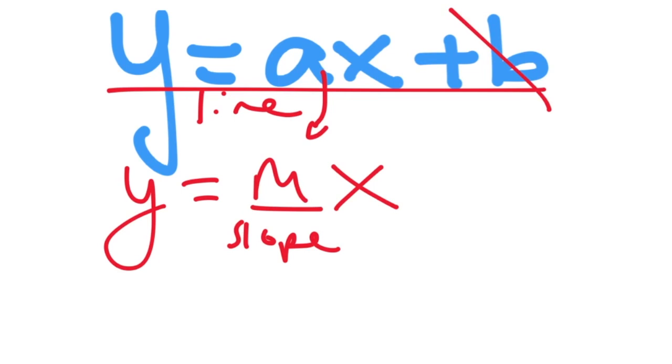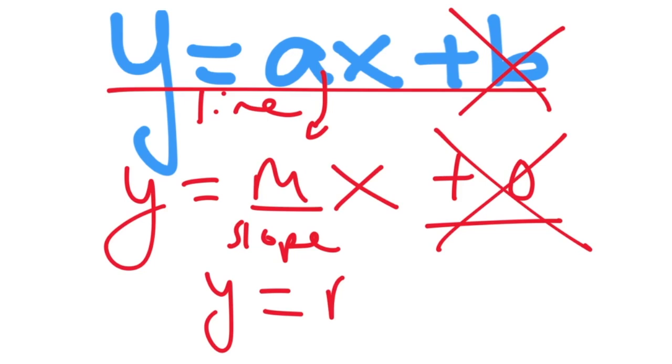We have gotten rid of the B because we are always going through the origin. So when we go through the origin, we are not adding anything on here. So the equation for a proportional relationship, that line is very simple. You just write Y is equal, find the slope, and multiply that by X.